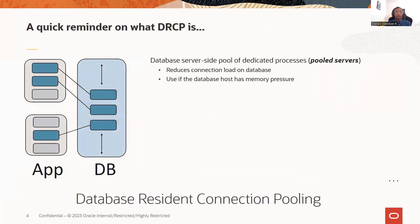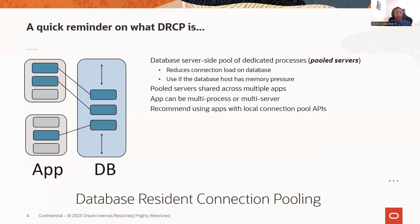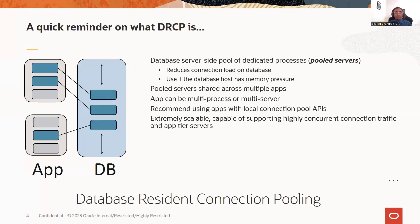DRCP is basically a collection of server-side processes, or dedicated database server processes. When I say a database server process, it is a combination of server process and database sessions. These pooled servers are shared across applications running on the same or several hosts. It is particularly useful for multi-process clients unable to fully share connections on the client tier. It is generally recommended that you always use DRCP with apps that have local connection pool APIs. And DRCP is highly scalable, supporting tens of thousands of database connections, even on a commodity box.